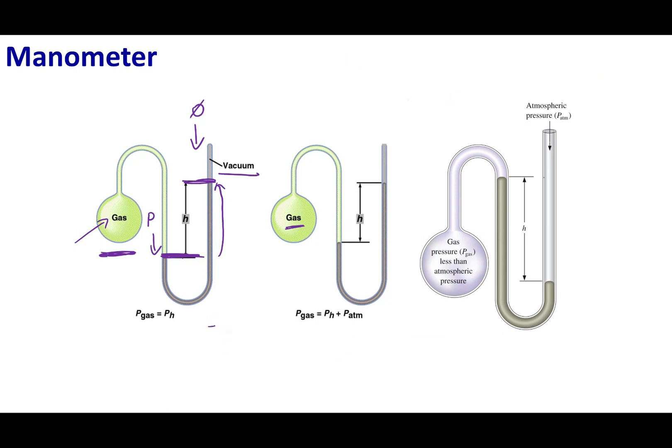To remind you, if my mercury levels were even here, I can say that the pressure of the gas equals the pressure of the atmosphere. But what I see here is that the mercury is rising on the gas side. What that means is that the gas has less pressure than the atmosphere.